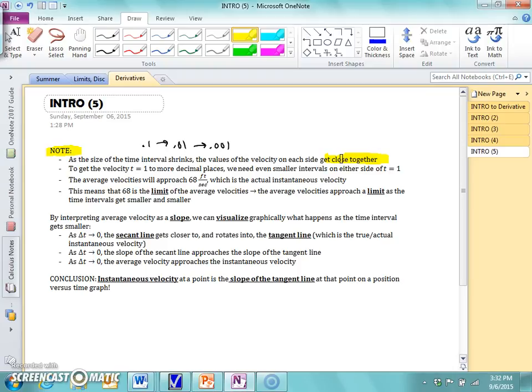To get the velocity at exact, or to get the velocity to more decimal places, so we had it to one decimal place. But we want them to be the same at every decimal place. You would have to keep using smaller and smaller intervals on either side of one. So maybe like 0.999999, forever and ever, 0.000001, keep going and going and going.